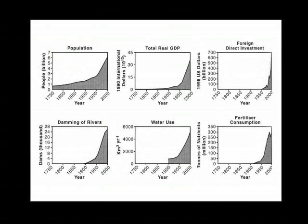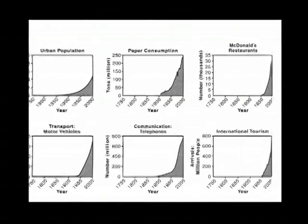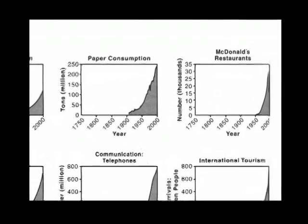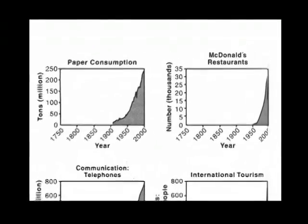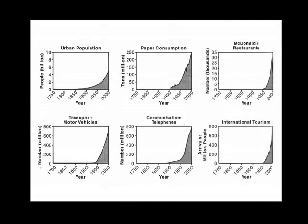For example, here we have the GDP, the human population, the use of fertilizers, the use of water, the use of paper. Here is the one that's the real killer — the index of planetary breakdown: the exponential increase of McDonald's restaurants around the world. Many other things, all going up exponentially fast.